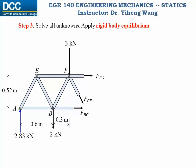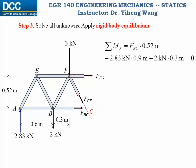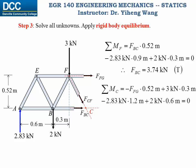We can write three equilibrium equations. Normally we would write two force equations and one moment equation. However, note that force FBC and force FCF are concurrent, and force FCF and force FFG are also concurrent. Therefore, it will be convenient to write two moment equilibrium equations about point C and point F. When the moment is summed about point F, only FBC appears, and you can solve it easily. When moment is summed about point C, you only have force FFG, and can easily solve it as well.